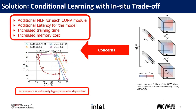However, such models rely on parameter-heavy activation conditioning done via FILM layers. Moreover, such models have increased test-time latency compared to the baseline models. Also, such conditioning is extremely hyperparameter sensitive.